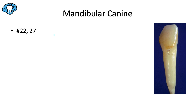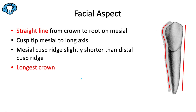This tooth has some similarities to the maxillary canine, so instead of going over every single similarity, I'm going to focus on and highlight the things that distinguish this tooth from the maxillary canine. One important distinguishing feature is that the mesial surface of the crown tends to form a straight line with the mesial surface of the root, and this straight mesial alignment is almost parallel to the long axis of the tooth — very different from the maxillary canine. In contrast, the distal surface is going to be more convex than the mesial surface.